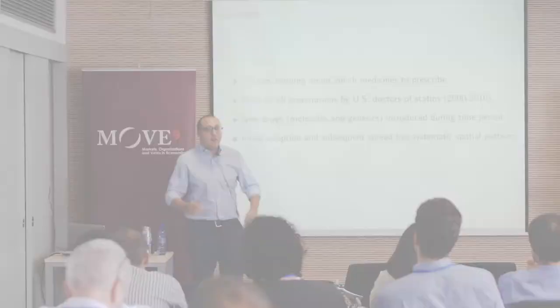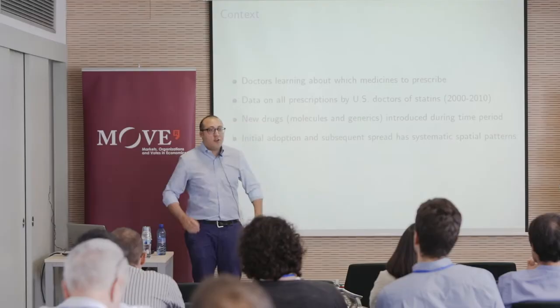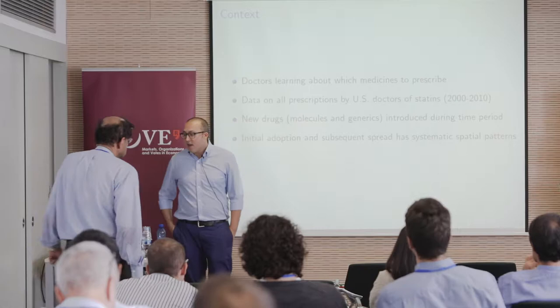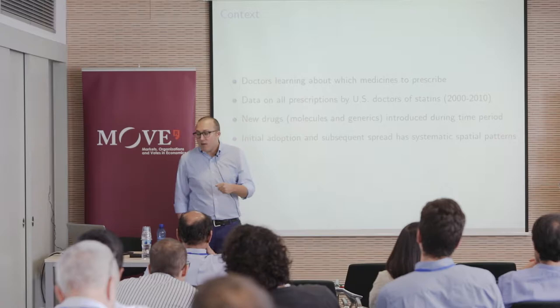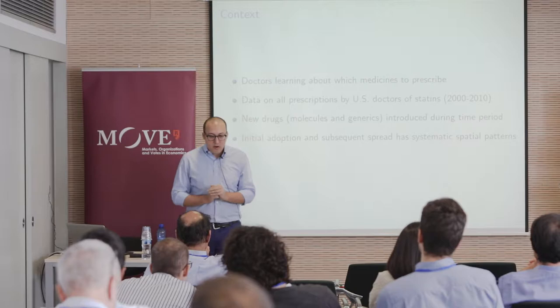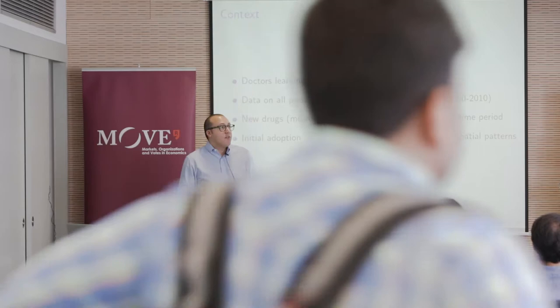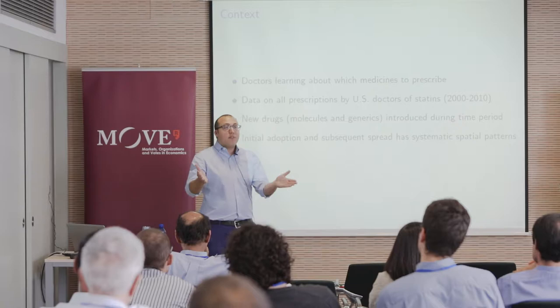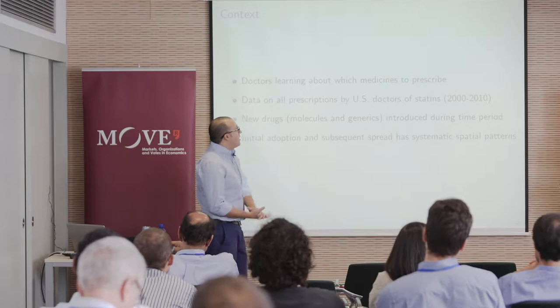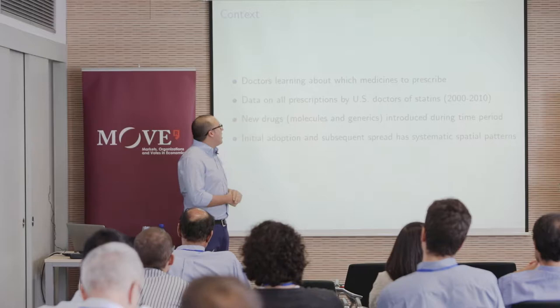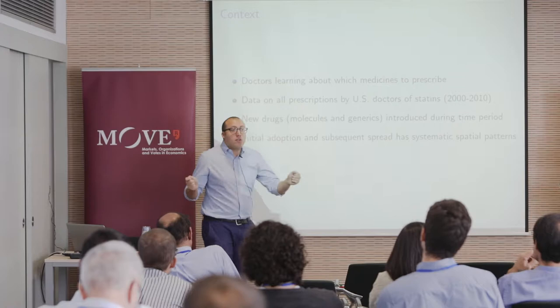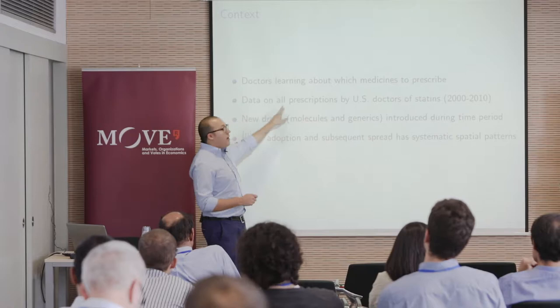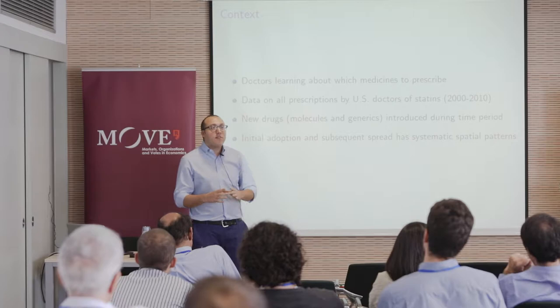The context I'm going to be thinking about is the diffusion of knowledge across space and across agents—specifically doctors who are learning about which medicines they want to prescribe. This is a world where new medicines are being invented over time, and doctors have to learn the properties of these new medicines. This is not an innovation model; we take the invention of medicines as given, and ask how doctors start using them. The data covers every doctor in the United States who, during 2000 to 2010, wrote a prescription for statins—cholesterol-lowering drugs.